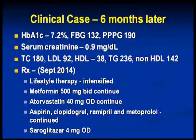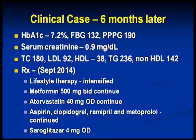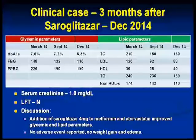Coming back to our patient — now 6 months down the line, HbA1c is almost near goal, as are fasting and postprandial values. Creatinine is normal, but triglycerides are still 236 and non-HDL 142. So lifestyle is intensified, metformin continues as does atorvastatin along with the other drugs, but we have now added saroglitazone 4 mg.